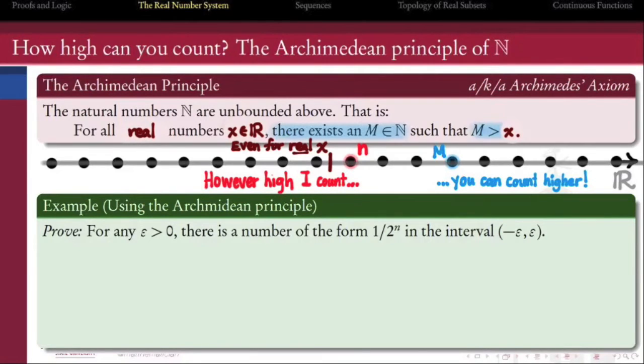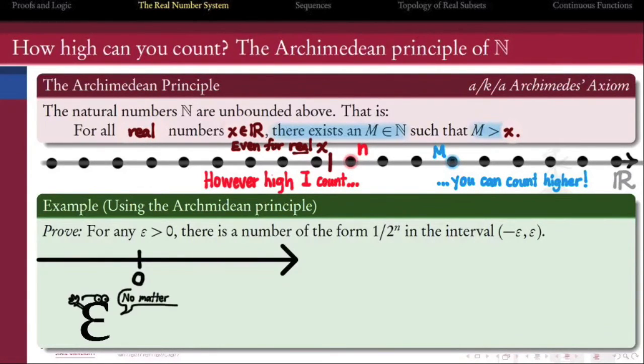Suppose that I assert that the set of numbers of the form 1 over 2 to the n is not bounded away from 0. In other words, for any epsilon that I choose, no matter how small epsilon is made, I can always find a number within an epsilon's reach of 0 that has the form 1 over 2 to the n.